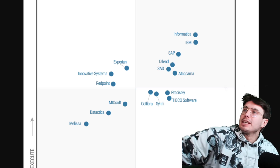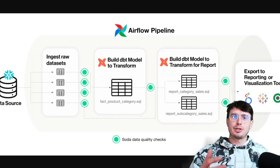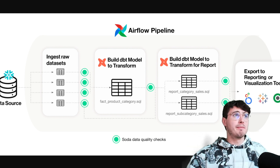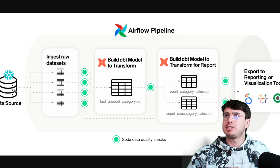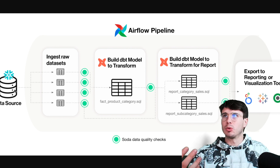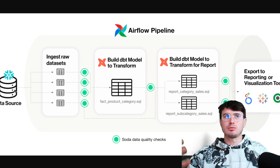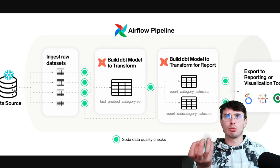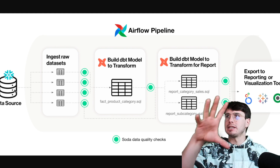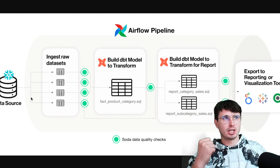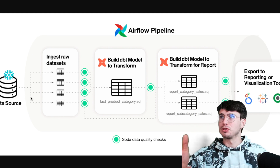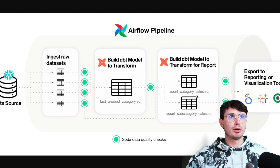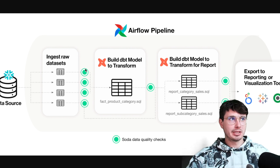Now I want to show you what a typical data process would look like. I have an example data quality pipeline where I'm going to ingest some data sets from a data source — maybe it's Snowflake or a database. I'll take those raw data sets, build a DBT model, do some transformations to get the data in the rough shape I usually expect, bringing disparate tables together — in this case bringing three different tables into one. That makes it easier to run data quality checks at mass rather than on those three individual tables.